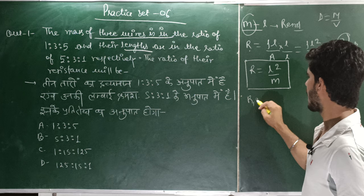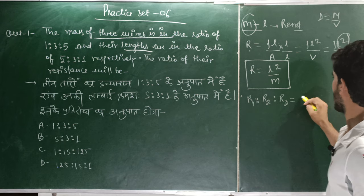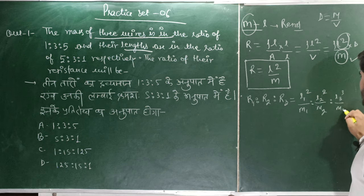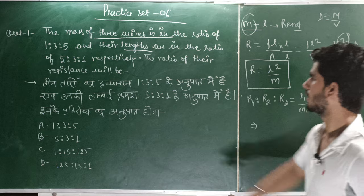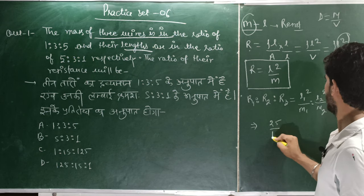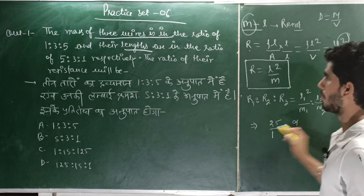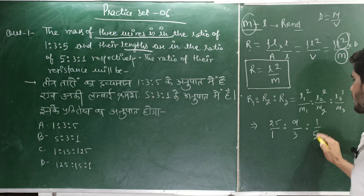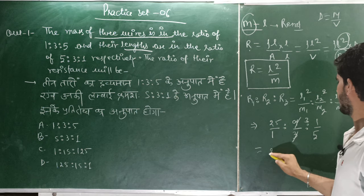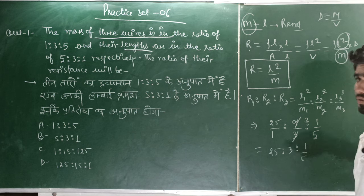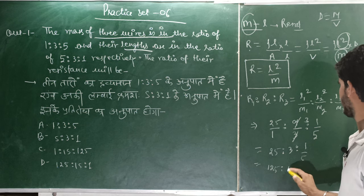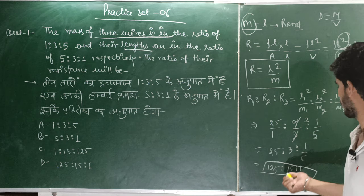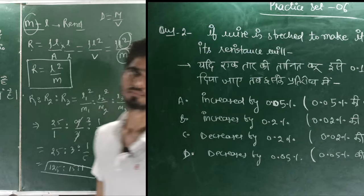For three wires, R1:R2:R3 equals (L1²/M1):(L2²/M2):(L3²/M3). Now substituting values: L1 is 5, so L1² is 25, M1 is 1; L2 is 3, so L2² is 9, M2 is 3; L3 is 1, so L3² is 1, M3 is 5. This gives 25/1 : 9/3 : 1/5, which simplifies to 125:15:1. So R1:R2:R3 = 125:15:1.